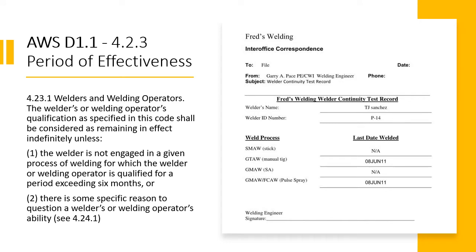AWS D1.1 paragraph 4.2.3, period of effectiveness: welders' or welding operators' qualification as specified in this code shall be considered as remaining in effect indefinitely unless the welder is not engaged in a given process of welding for which they are qualified for a period exceeding six months, or there is some specific reason to question a welder or welding operator's ability.